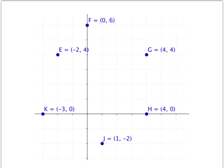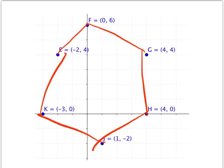Now, when connecting these points, make sure that you connect in order of the name of the polygon. In this case, the name of the polygon was EFGHJK, and then back to E.